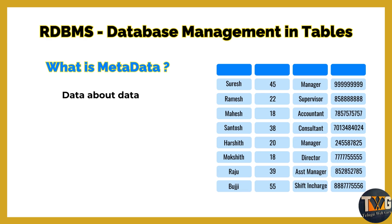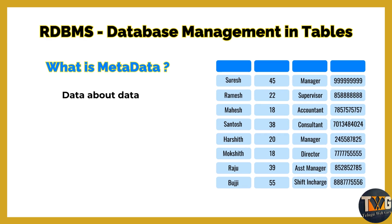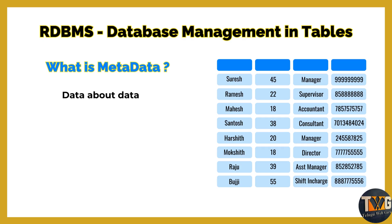Background data is related to background information. This data is related to the data. First of all, we need to represent data about data. This data is related to the background data. For example, this is the actual data.